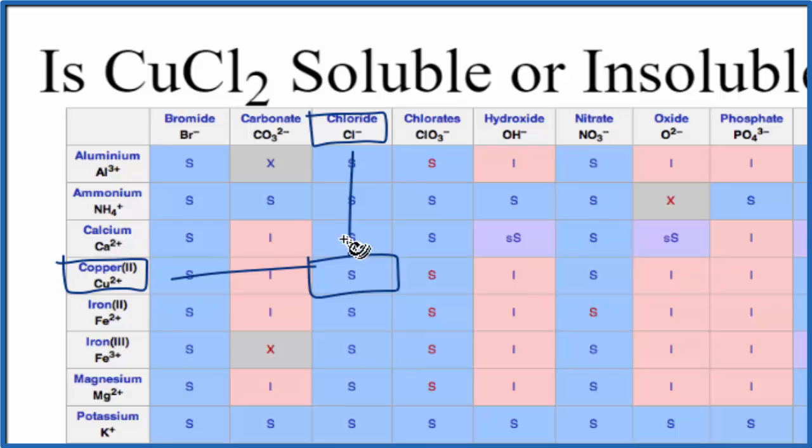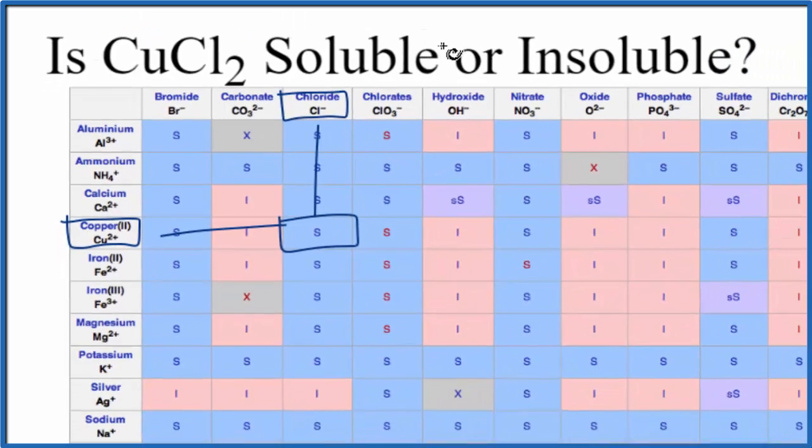The reason we know this is copper(II) is because each one of these chlorines is negative, and we have two of them, so this has to be 2+ for it to balance out. That's our copper(II) chloride, which is soluble in water.